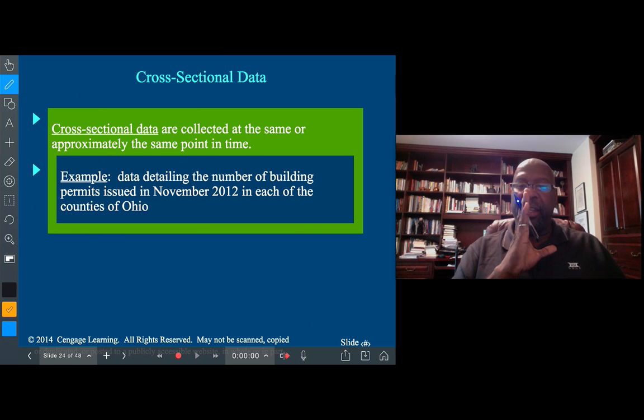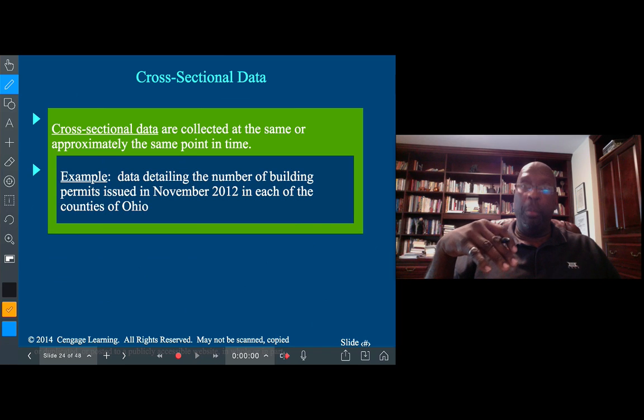So let's start off with cross-sectional data. Cross-sectional data is when we take data and we look at a set of data at a fixed point in time. In other words, we want a cross-section. Say for example, we are interested in the median price of a home in different cities across the province.